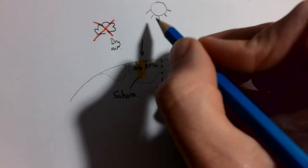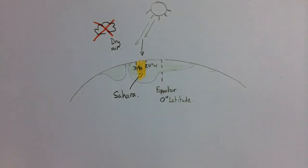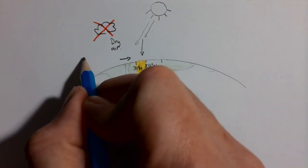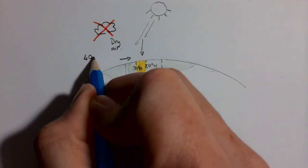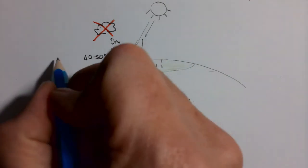Instead, you get the full heat of the sun that serves to create very high temperatures in the day, 40 to 50 degrees Celsius in the daytime.